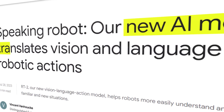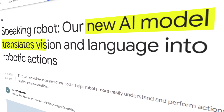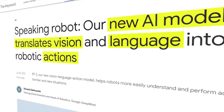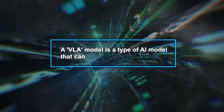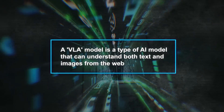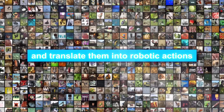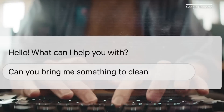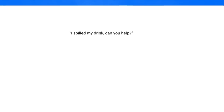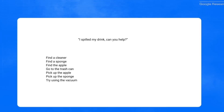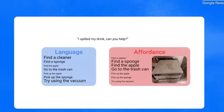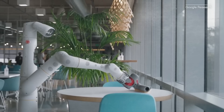RT2 stands for Robotics Transformer 2, and it's a Vision Language Action Model, or VLA for short. A VLA model is a type of AI model that can understand both text and images from the web and translate them into robotic actions. This means you can give a robot a simple command in natural language, like 'throw away the trash,' and the robot will know what to do, even if it has never seen that task before.